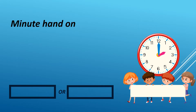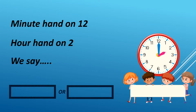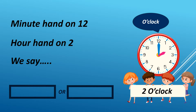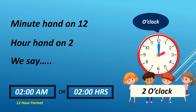Minute hand is on 12, hour hand is on 2 — we say 2 O'clock. It can either be AM or PM. For example, it is 2 AM in 12-hour format. We read it as 200 hours in 24-hour format.